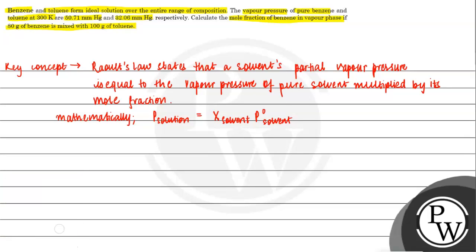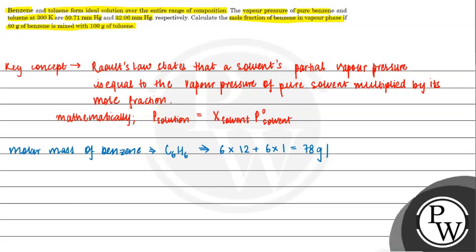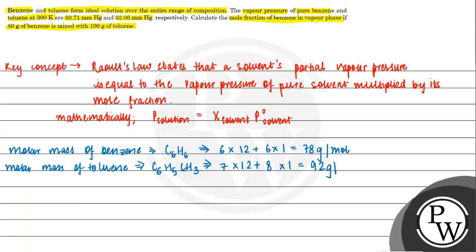Now let's get the question solved. First, we will note the molar mass of benzene. The molecular formula of benzene gives a molar mass equal to 78 grams per mole. And molar mass of toluene — the molecular formula of toluene is C6H5CH3 — so its molar mass is 7 times 12 (for 7 carbons) plus 8 times 1 (for 8 hydrogens), which gives a total of 92 grams per mole.